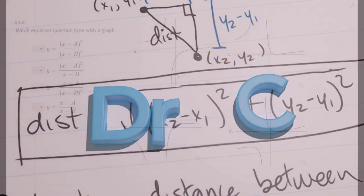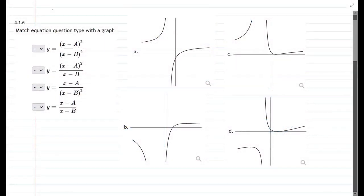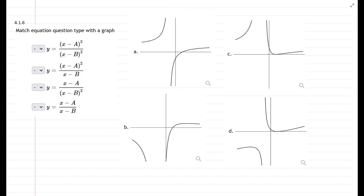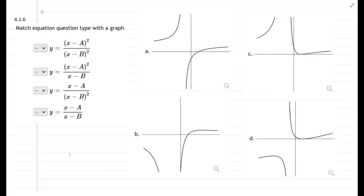In this question we have to match the equations of rational functions with graphs of rational functions. This question is very abstract, they don't actually tell us any information about what the values of a and b are, so it may seem very difficult to answer this question.